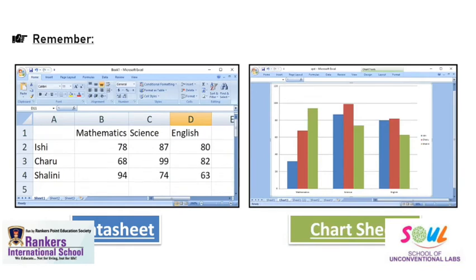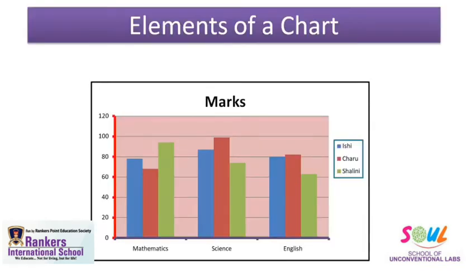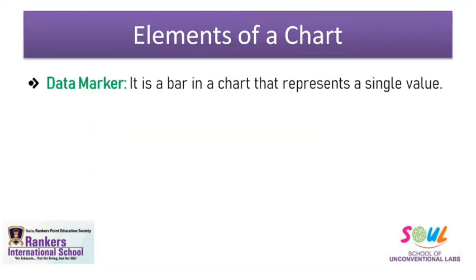Now let's move on to the next topic: elements of a chart. Suppose you have this column chart — it has its own parts, let's discuss them one by one. The first component is data marker. In your chart, a single column that represents one value is called a data marker. So we can say a data marker is a bar in a chart that represents a single value.